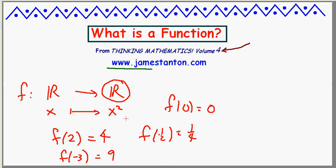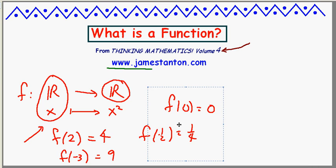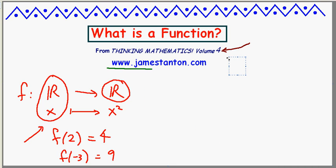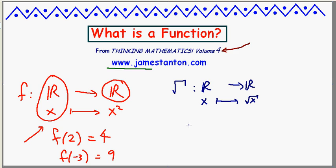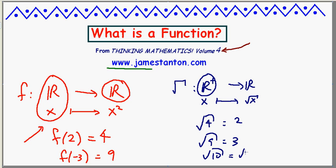We can ask about the domain and range of a function. The domain means all the allowable inputs — for the squaring function I can put in anything. The range is the types of numbers that come out. The square root function has some delicacies: I want it to go from the set of all positive reals, so the square root of 4 is 2, the square root of 9 is 3, the square root of 10 is whatever it is. That's a function.